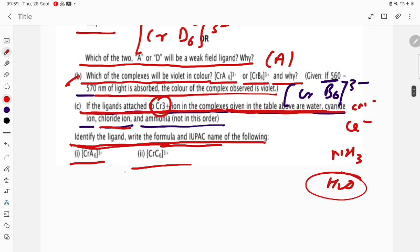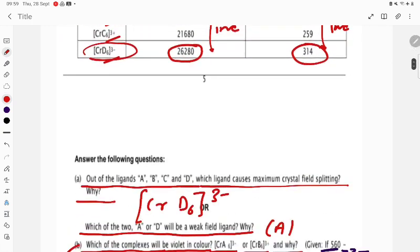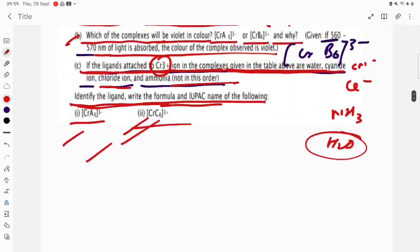So only two they are asking. Identify the ligand, write the formula. If the ligands attached to the ion in complex given in table above are water, cyanide, chloride, and ammonia, not in this order. So you can answer very easily, student. IUPAC name. This is all about the answer. Thank you very much for watching.